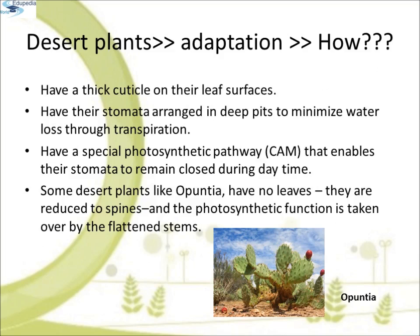How do desert plants adjust to extreme conditions? Many desert plants have a thick cuticle on their leaf surface and have their stomata arranged in deep pits to minimize water loss through transpiration. They also have a special photosynthetic pathway called the CAM pathway that enables their stomata to remain closed during daytime. Some desert plants like Opuntia have no leaves — they are reduced to spines and the photosynthetic function is taken over by the flattened stems.